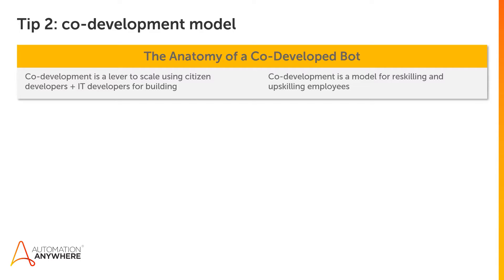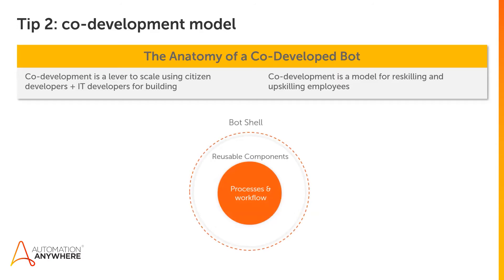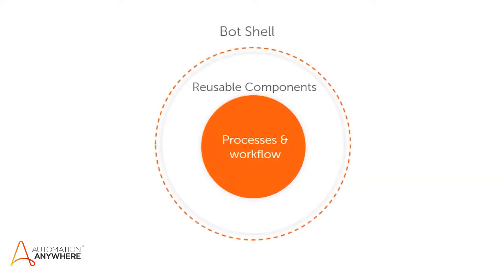That analysis can be really helpful in taking on new opportunities. If we look at the anatomy of a co-developed bot, there are three components. First is the core, which is the processes and workflow — the actual thing that we're trying to automate. Outside of that, we have our reusable components, which may be the packages or subtasks that we use across multiple bots to accelerate bot building. Wrapped around all of that, we have our bot shell.